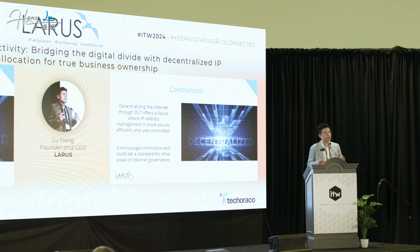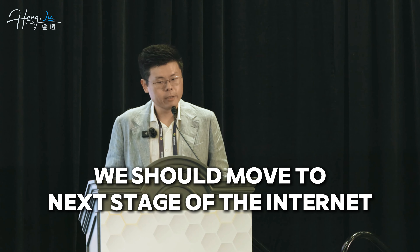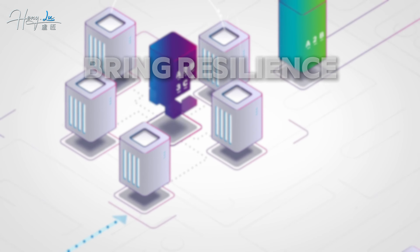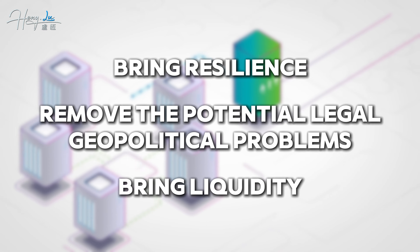And those small private companies — the five of them who run the registration database — could be subject to financial failure. One good example is RIPE NCC recently facing huge financial difficulty with its membership because they couldn't convince members to pay enough fees to keep it operating. Those bureaucratic organizations who operate a few-hundred-megabyte database — while they did a great job — should now be a historical artifact. We should move to the next stage of the internet. This should be committed to the core of the internet. We not only bring resilience and remove potential legal and geopolitical problems, but it will also bring liquidity to the current IP address market, therefore increasing the total capitalization of our industry collectively, potentially by tenfold. And the IPv4 address is really the perfect asset the world has been looking for in the virtual world to replace gold.